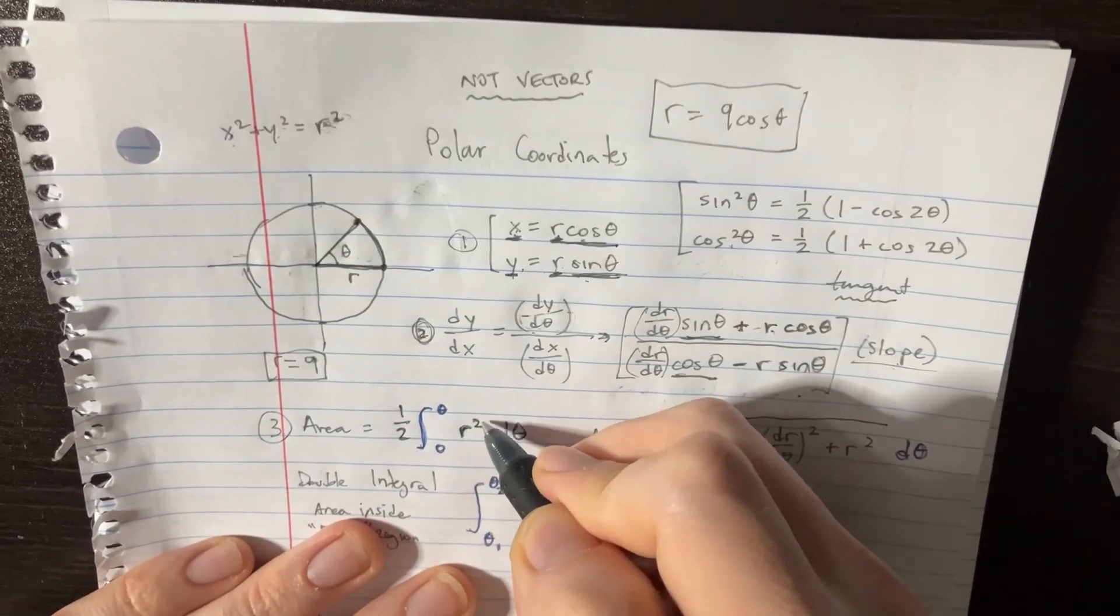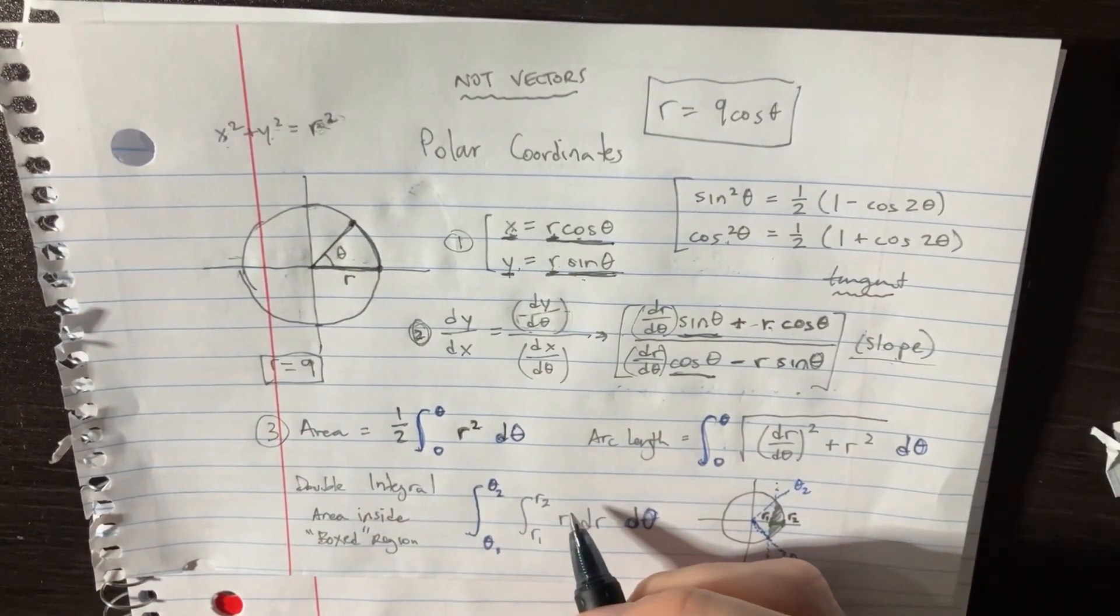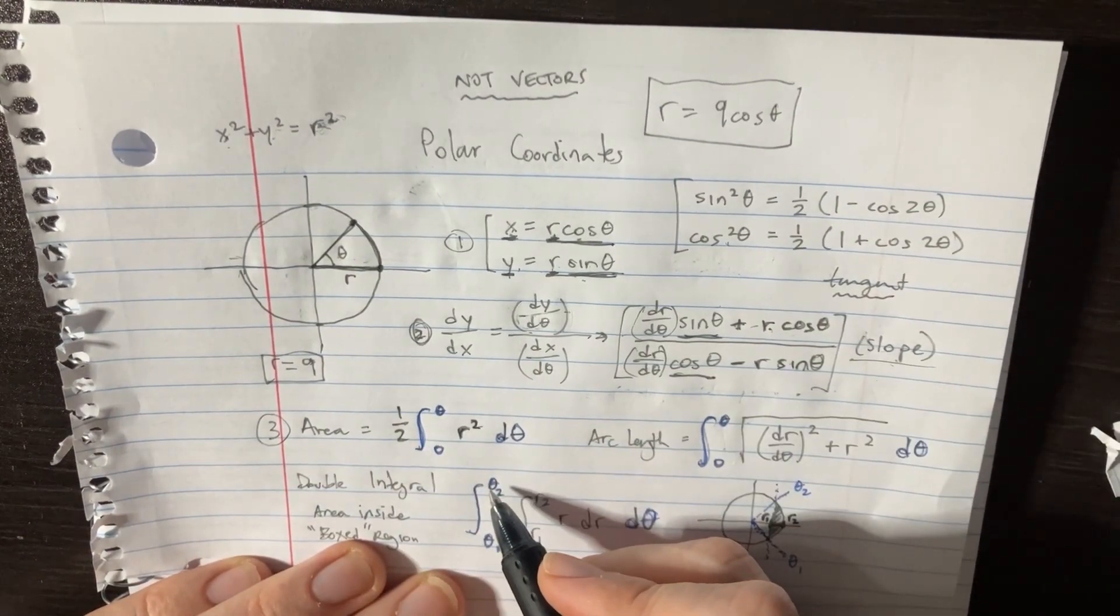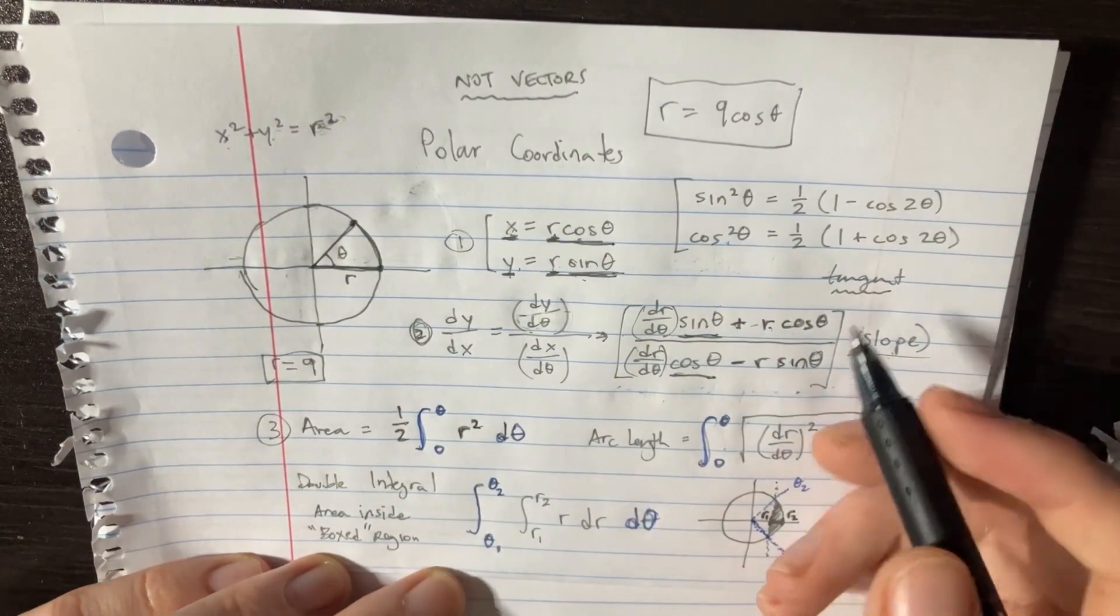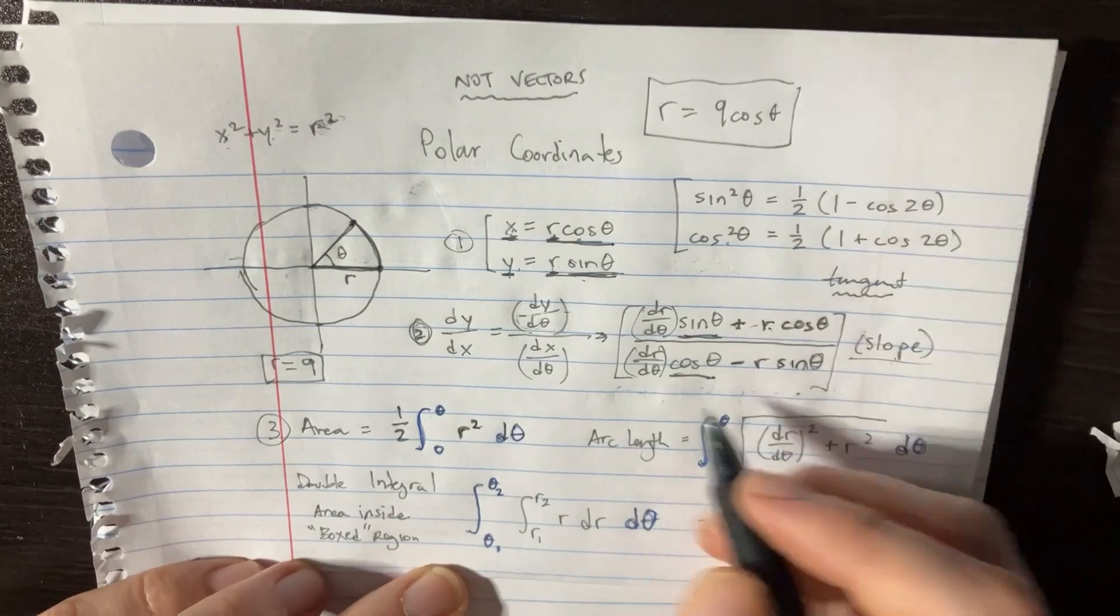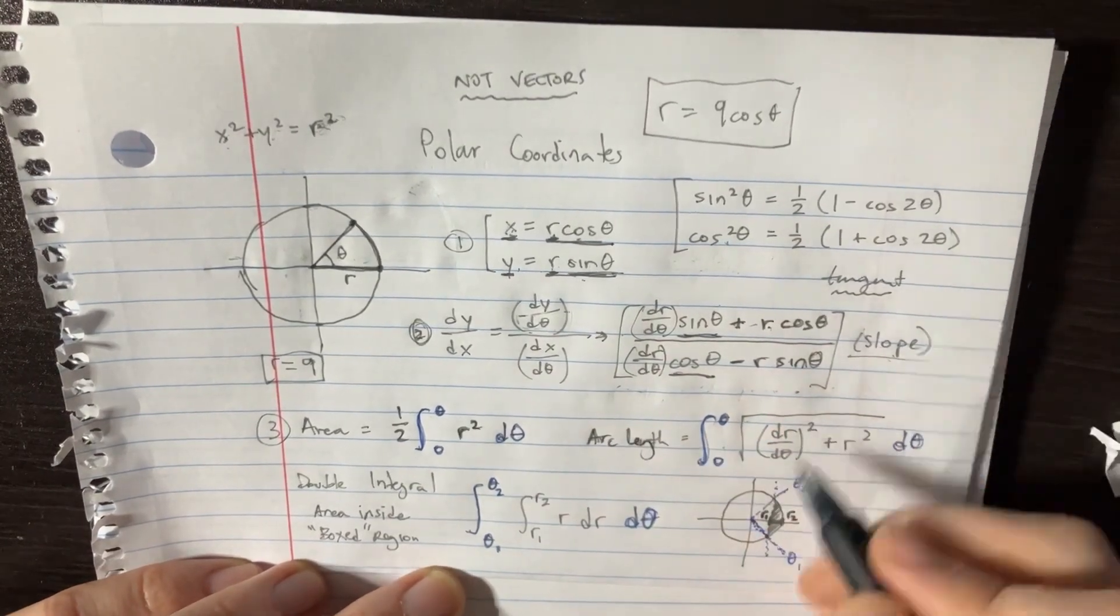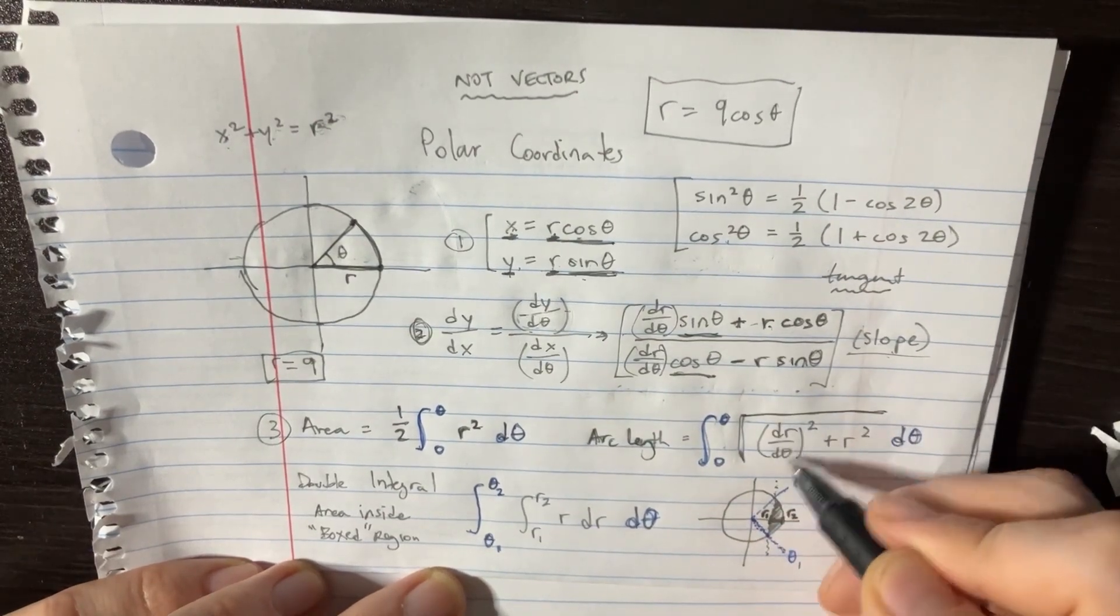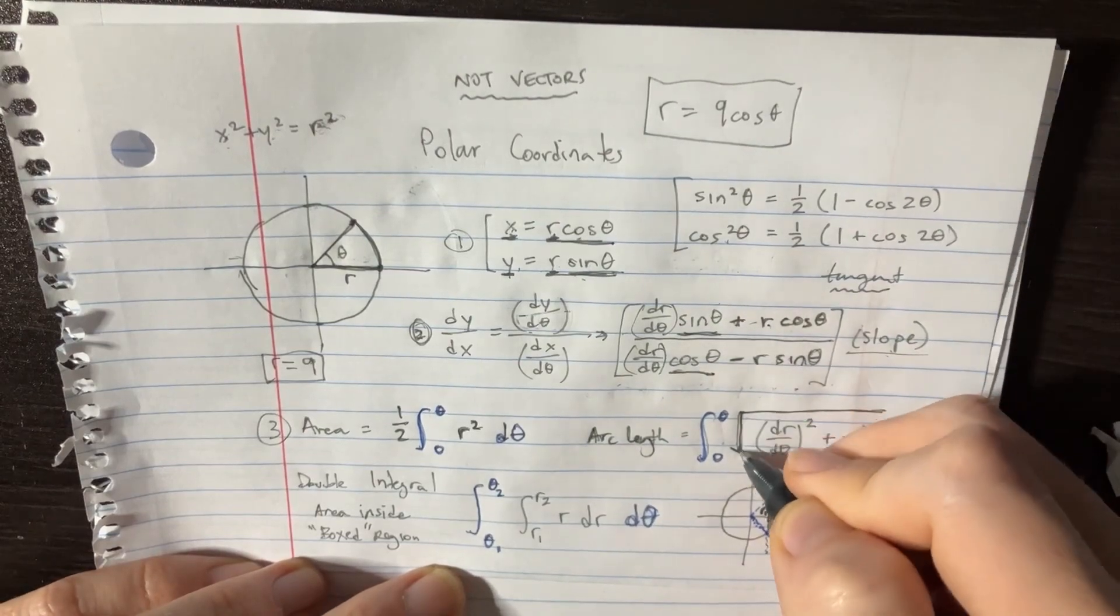Then you just need to do the arc length over here, and that's going to be the square root of dr squared plus r squared.